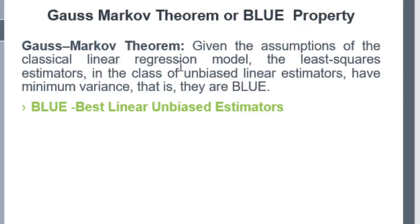Given the assumptions of the classical linear regression model, the least square estimators which are linear and unbiased have minimum variance, or they are the Best Linear Unbiased Estimator. This best estimator property is simply known as the BLUE property.